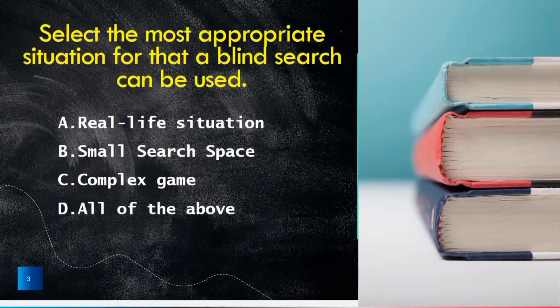Third question is select the most appropriate situation for that a blind search can be used. The first answer may be real life situation, small search space, complex game or all of the above. The true answer is small search space.